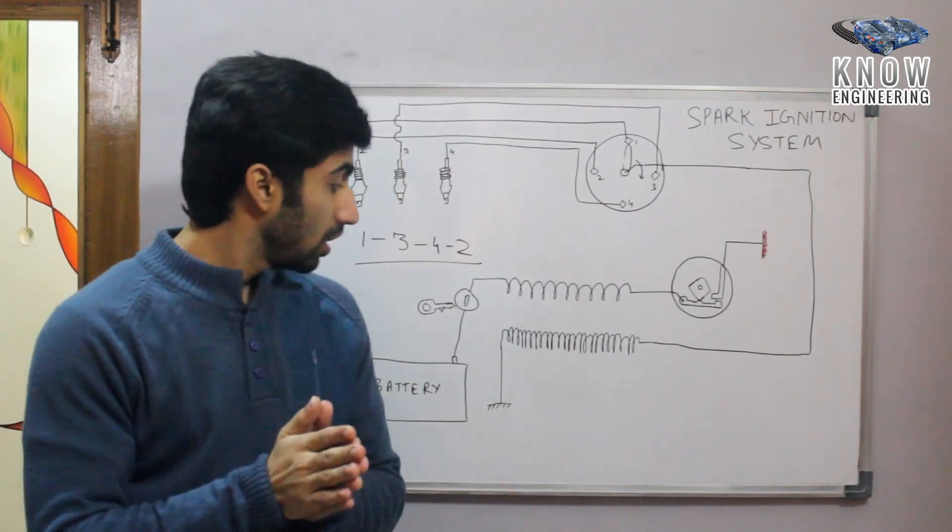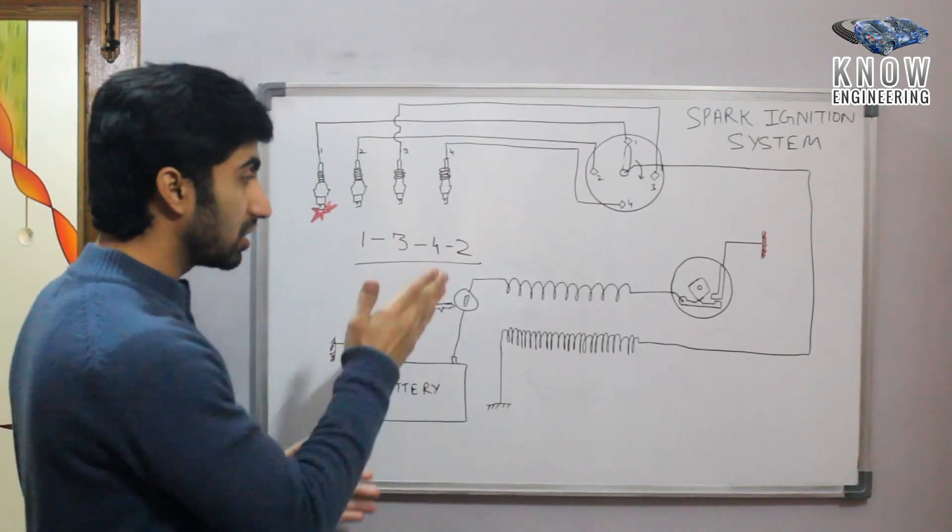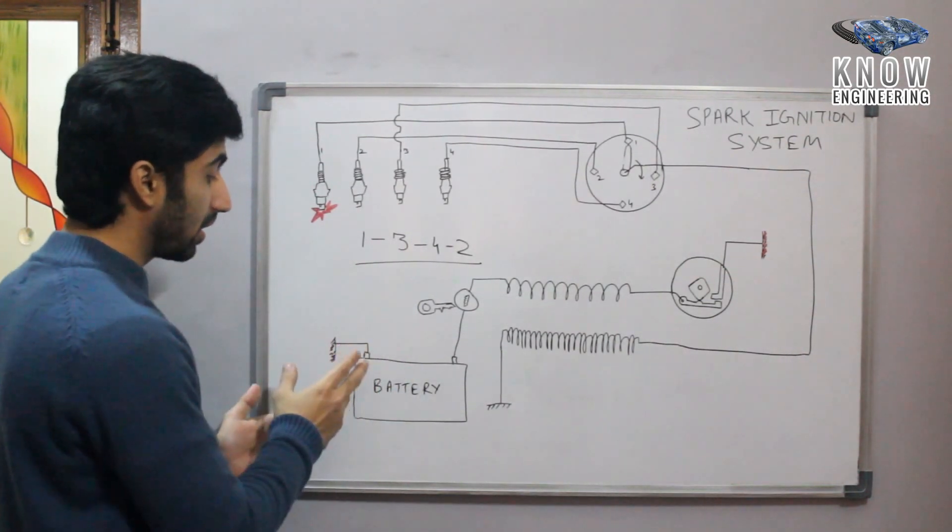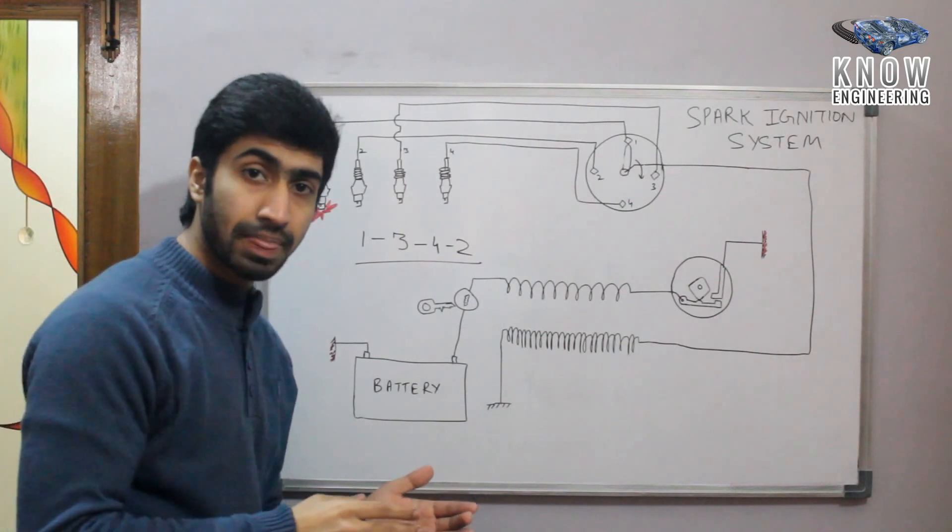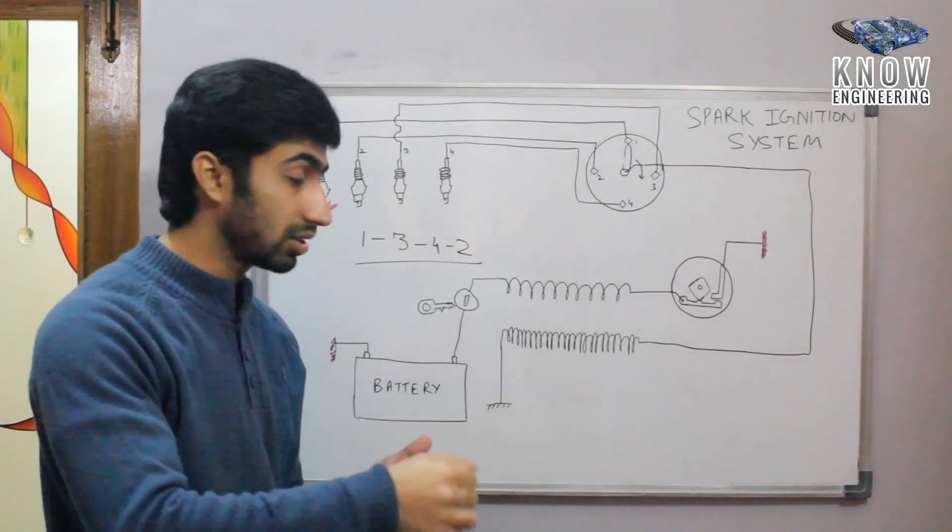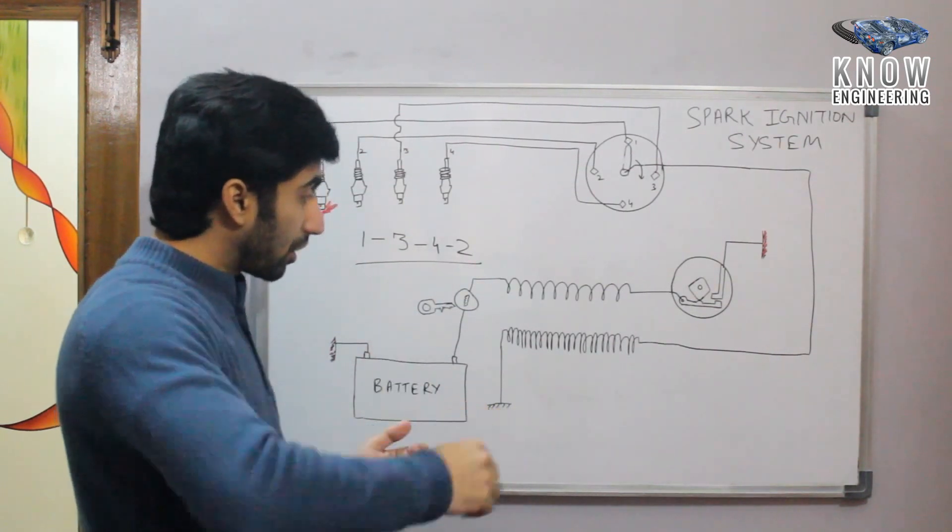What is the circuit? The first terminal of the battery is connected to the metal body of the car and the second terminal is connected to the key. What happens when we rotate the key? It closes the circuit and the primary coil gets the current.